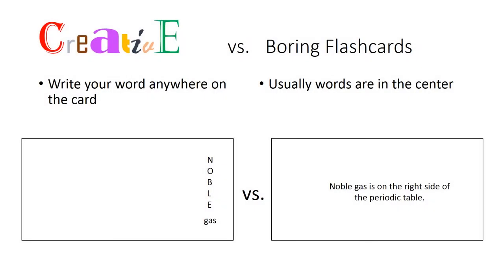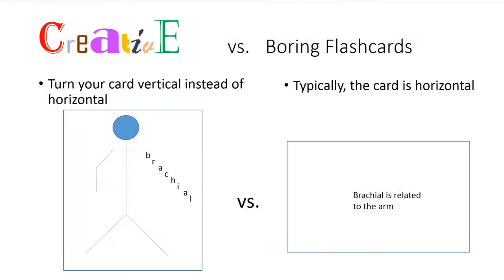Creative flashcards: write your word anywhere on the card. For example, write 'noble gas' on the right side of your card because that's where they're found on the periodic table. Also, turn your card vertical instead of horizontal. For example, with an anatomy word like 'brachial,' if you turn your card vertical you can imagine a body laid out standing up, and now you can write the word 'brachial' where the arm would be.